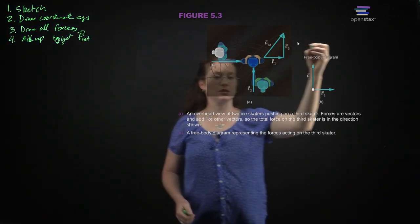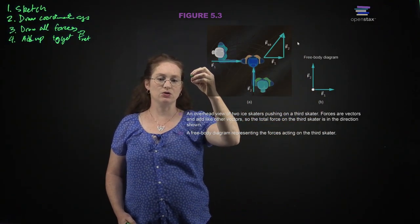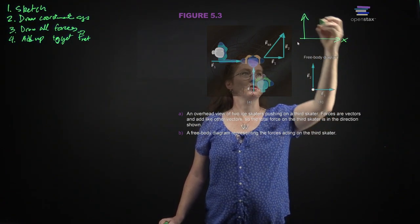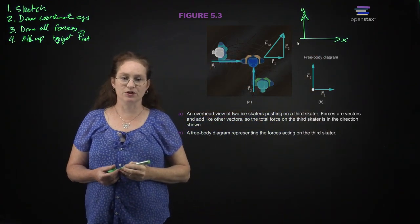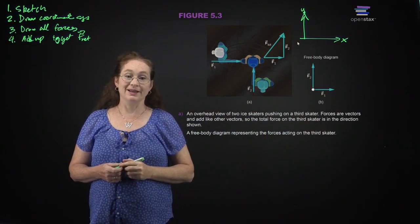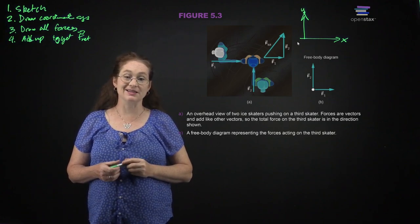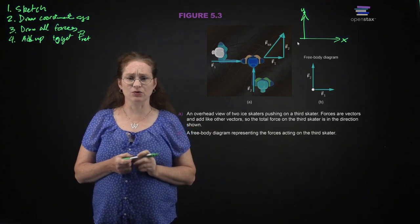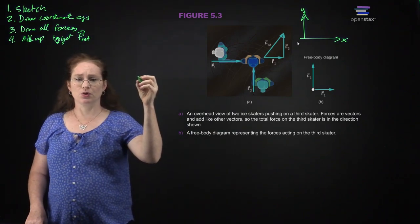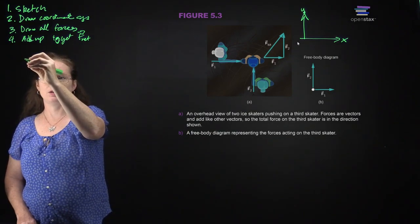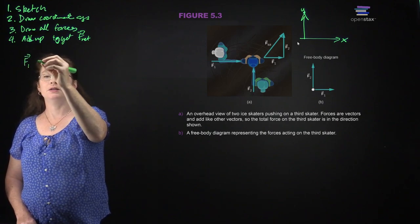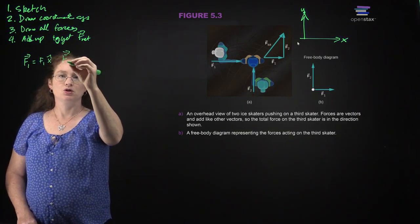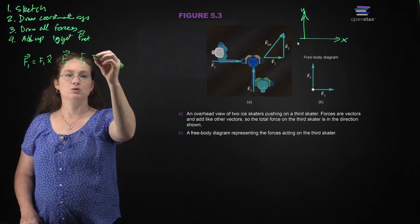Here is an overhead picture of two skaters pushing on a third skater. We draw our coordinate system, x and y. The first skater pushes with force F1 in the x direction, and the second skater pushes with force F2 in the y direction. So F1 equals the magnitude of F1 x-hat, and F2 equals the magnitude of F2 y-hat.